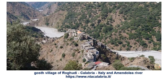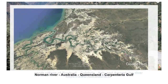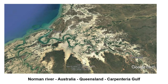Here we have a picture of the Amendolaia River in Calabria, Italy, with the ghost village of Roghudi. In this aerial picture, it is possible to see the Norman River in Queensland, Australia, that ends in the Gulf of Carpentaria.